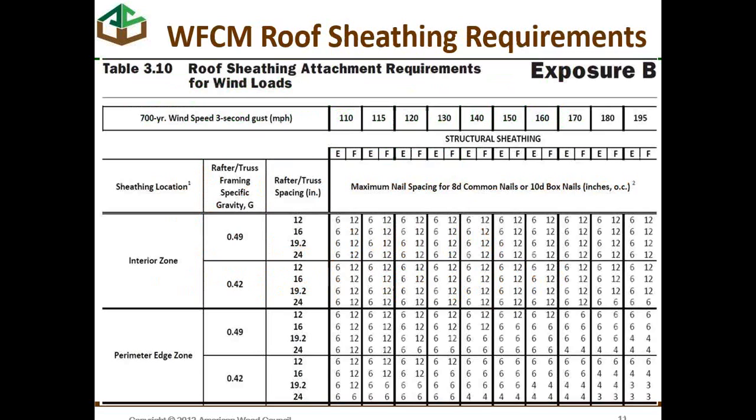If we look at the tables in the Wood Frame Construction Manual — Table 3.10 for our exposure B condition and 140 mile-per-hour wind speed — with hem-fir framing having a specific gravity of 0.42, looking at an edge zone with a 24-inch rafter spacing, for 140 miles per hour the edge and field nail spacing requires 8-penny common nails at 4 inches on center.